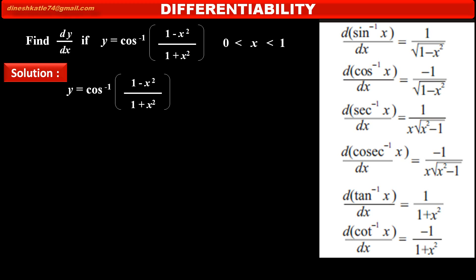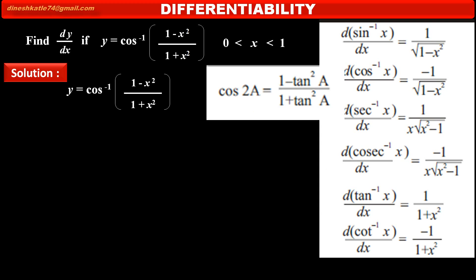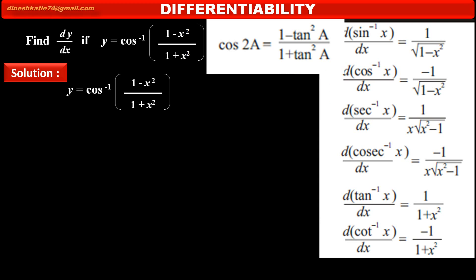Now see the solution. y is equal to cos inverse of (1 minus x square) upon (1 plus x square). The function inside the bracket matches the trigonometric formula cos 2a = (1 minus tan square a) upon (1 plus tan square a). Therefore, we can simplify the given function by using this trigonometric formula.